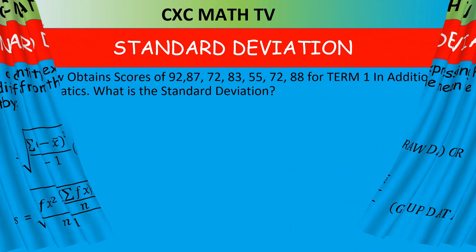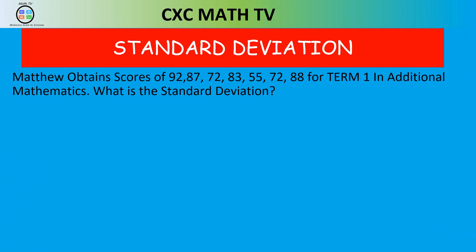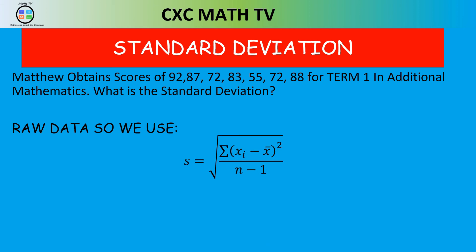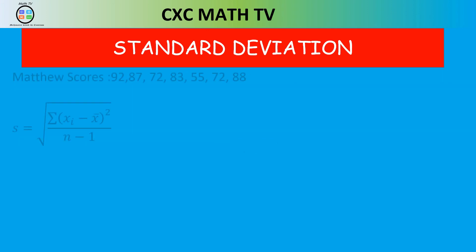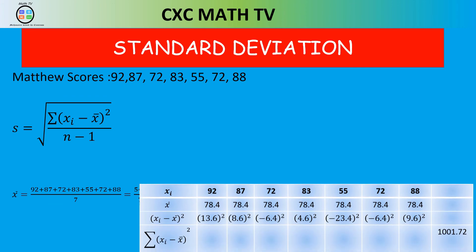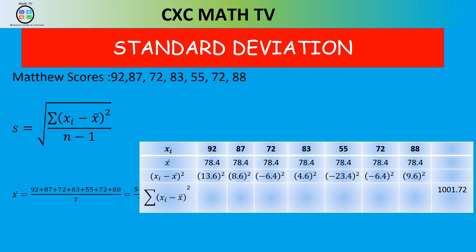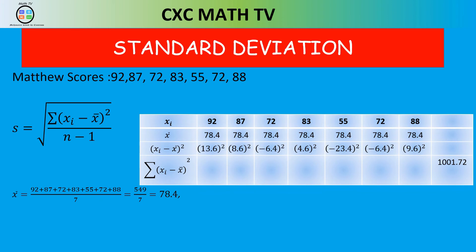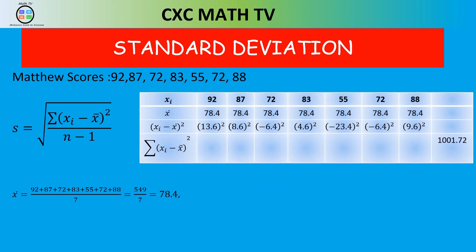Now we find the squared differences from the mean. For each score: 92 − 78.4 = 13.6, squared = 184.96; 87 − 78.4 = 8.6, squared = 73.96; 72 − 78.4 = −6.4, squared = 40.96. Continue for all remaining terms, then sum all the squared differences to get Σ(xᵢ − x̄)² = 1001.72.